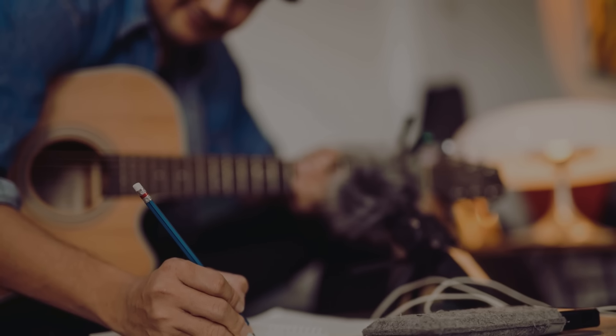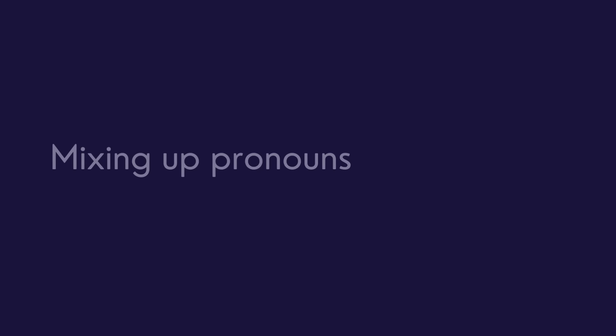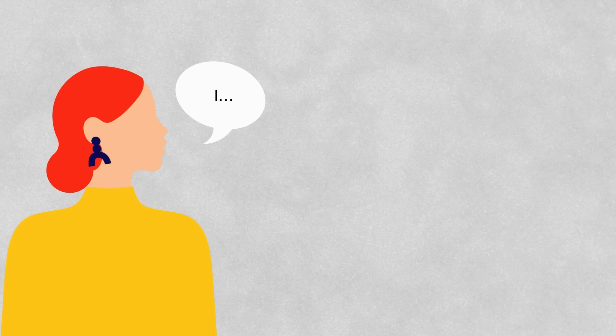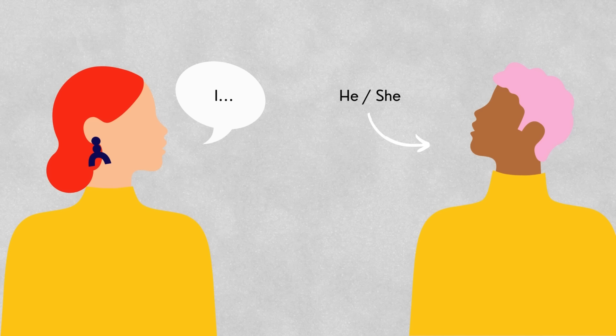The first mistake to avoid as a beginner songwriter is a lyric writing tip. The mistake is mixing up pronouns inside the lyrics of your songs. What I mean is: when you sit down to write a song from a particular perspective — there's someone singing the song and maybe another character you are singing to or about — often what I see is songwriters will start by referring to that other character as 'he' or 'she,' and then switch the pronoun.